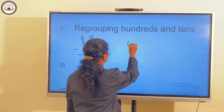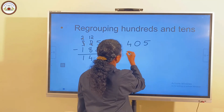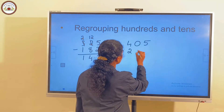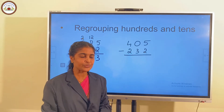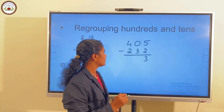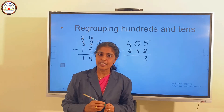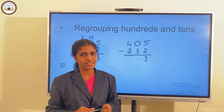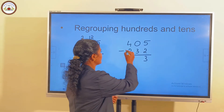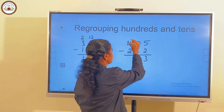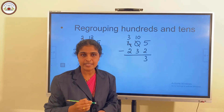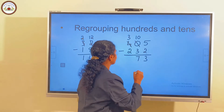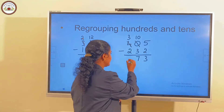Consider one more question: 405 minus 232. First, we subtract the ones place: 5 minus 2 is 3. Now 0 minus 3 — it is not possible to subtract 0 minus 3, so we regroup the hundreds place. Now we have 3 hundreds and 10 tens. 10 minus 3 is 7. And 3 minus 2 is 1.